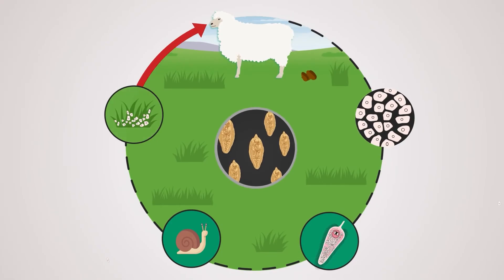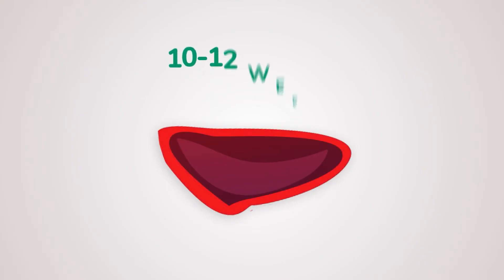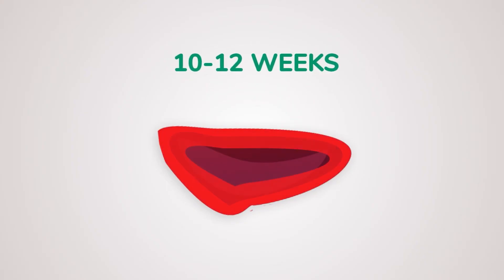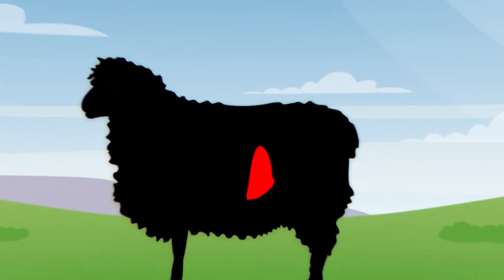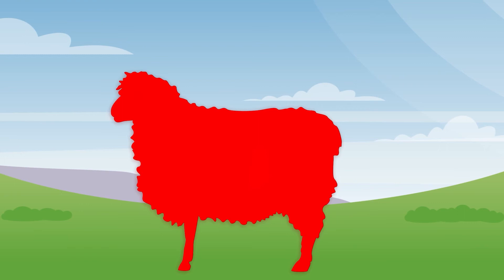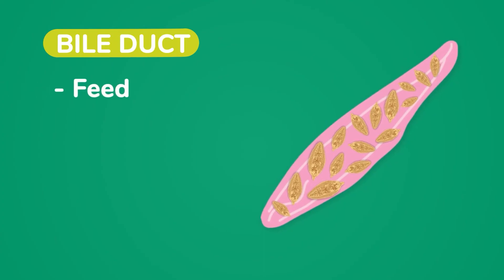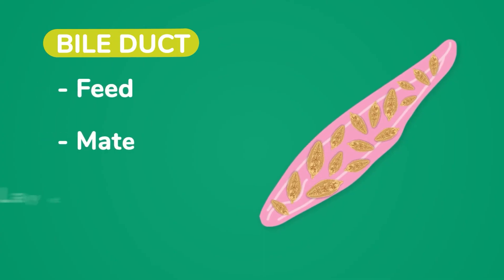Once eaten, the liver fluke larvae penetrate the gut wall and migrate to the liver, spending the next 10 to 12 weeks munching their way through liver tissue and causing a lot of damage to the infected sheep. Once they reach adult stage, they migrate to the bile ducts where they feed off blood, mate and lay eggs, and so the cycle continues.